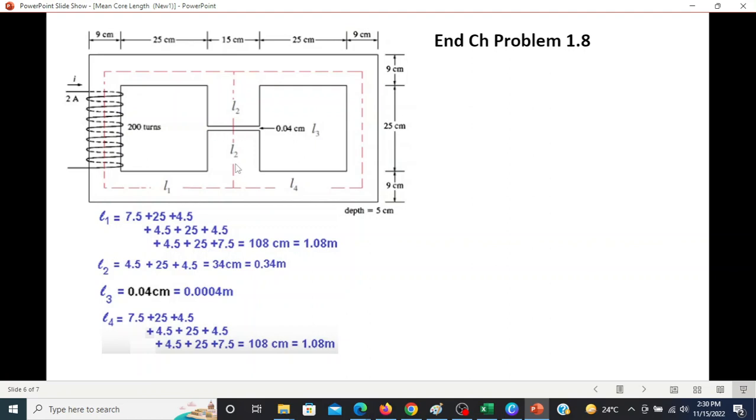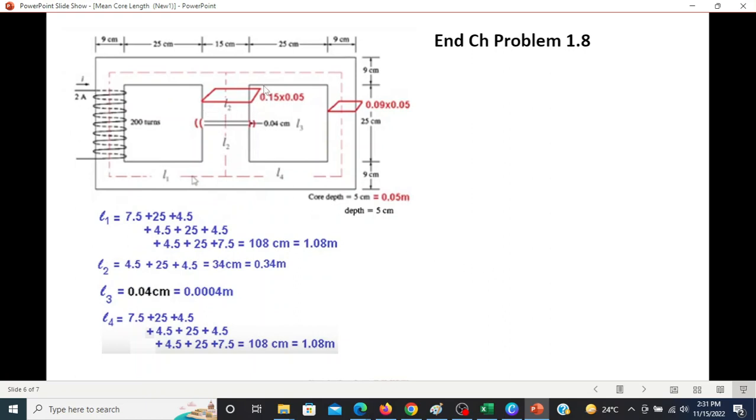L2 is very negligible, 0.04. Air gap length given 0.4 cm. L4 exactly same as L1, so 108 cm. Area of cross-section which is 15 cm convert to 0.15, depth is 5 cm meter convert 0.05. Area of cross-section part 2, width is 9 cm, 0.09, depth is 0.05.